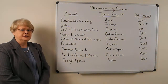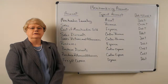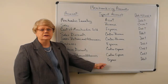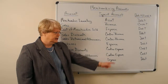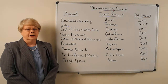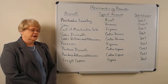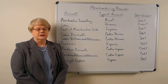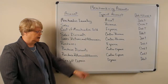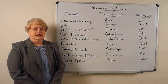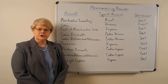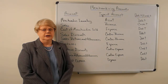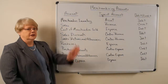The last account is freight expense. Freight expense is used to record any transportation cost. It is an expense account and it has a normal debit balance. It is used if the seller pays the transportation cost, in which case it goes into the expense account called freight expense. However, if the purchaser pays the transportation cost, it is included with the cost of inventory and would go directly into the inventory account.